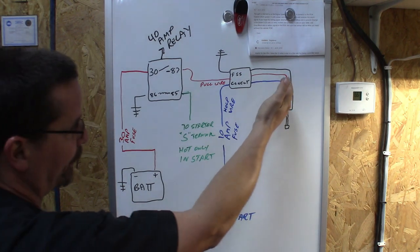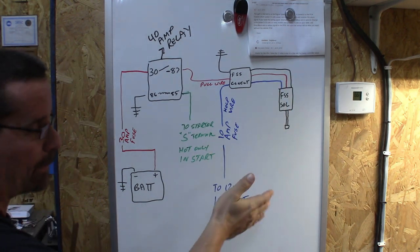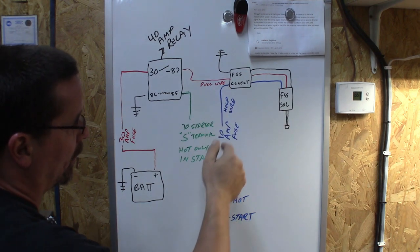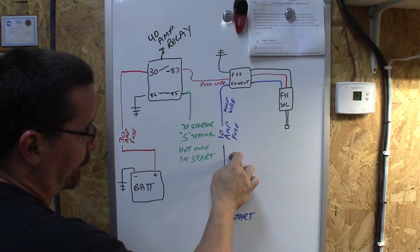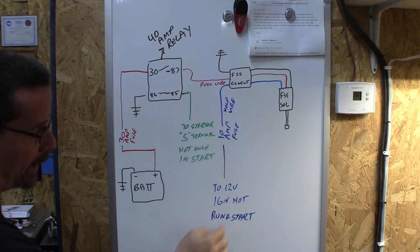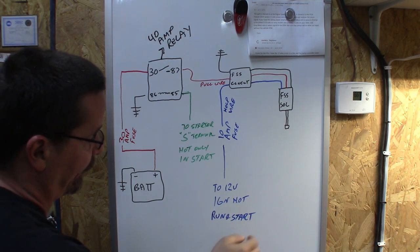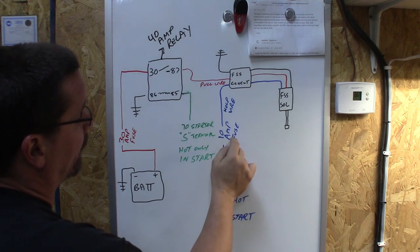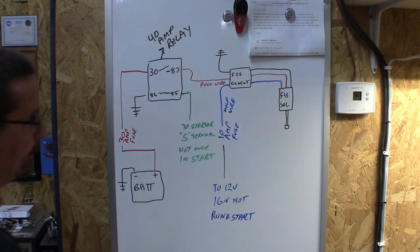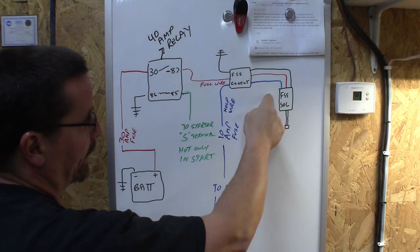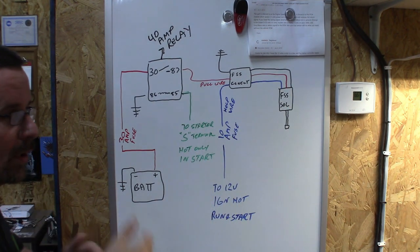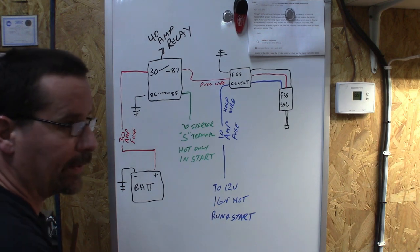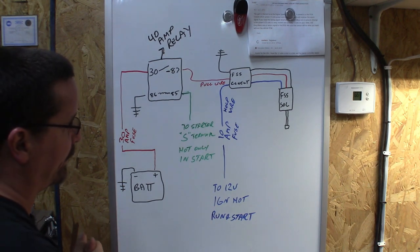Once that plunger is in place it's going to need something on that keeper magnet to keep it in place. So that's where we run a wire straight to 12 volt ignition hot. Make sure it is hot in run and start. I'll explain that here in a minute and put a 10 amp fuse in line there. That will keep that solenoid plunger pulled up with the keeper magnet as long as the key is in the ignition position.